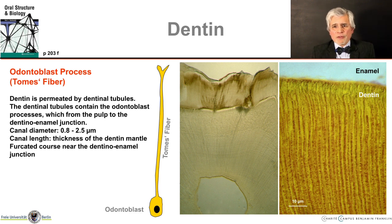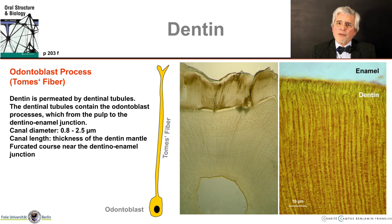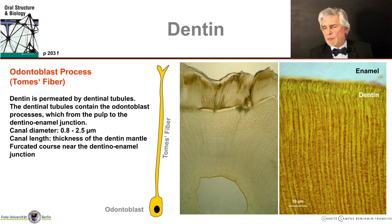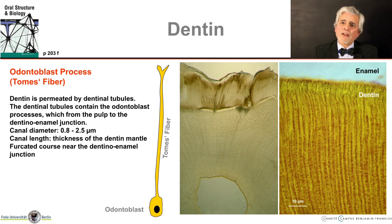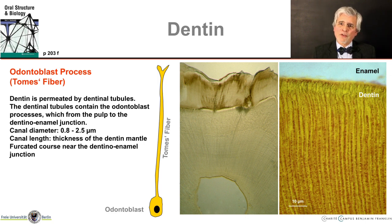Dentine is formed around the odontoblast processes, thus creating canals in which the odontoblast processes run. These canals have a diameter of 0.8 to 2.5 micrometers and are as long as the dentine is thick — even a little bit longer due to their slightly curved course. It should also be mentioned that the odontoblast processes have some branches at the dentino-enamel junction, but only there, not along their course. And accordingly, the little canals at the dentino-enamel junction are also connected to each other by these branches.